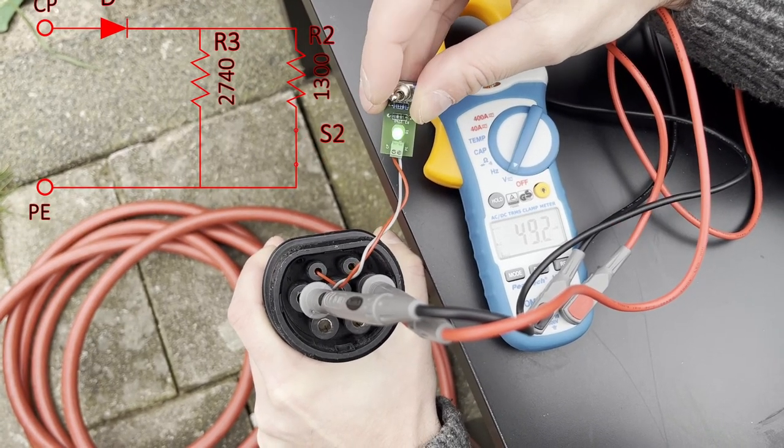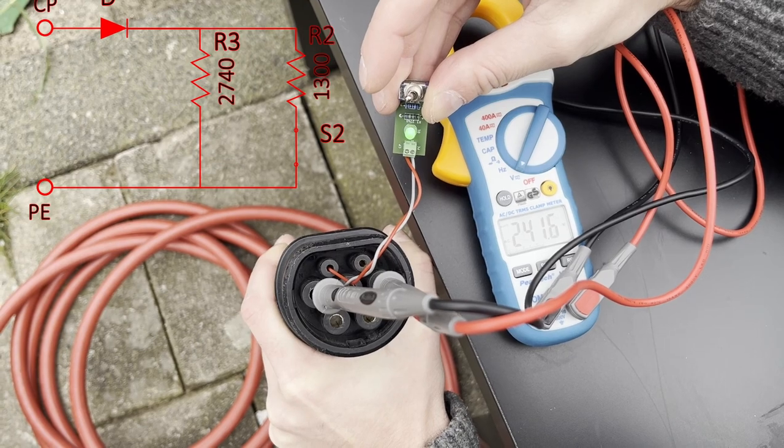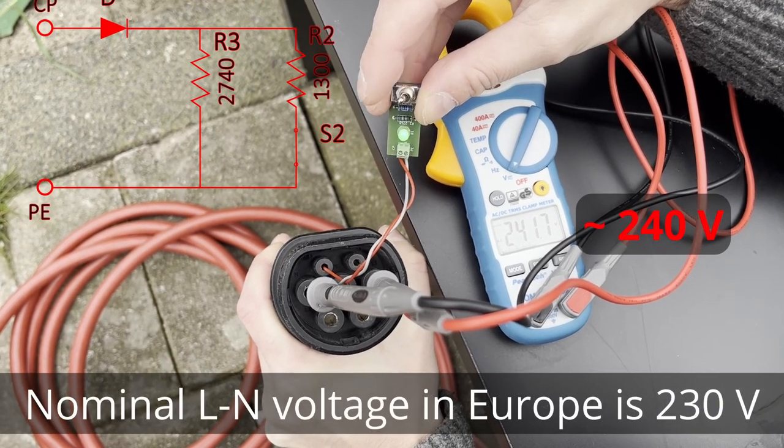When the electric vehicle closes the switch, the charging station connects the electric grid to its output.